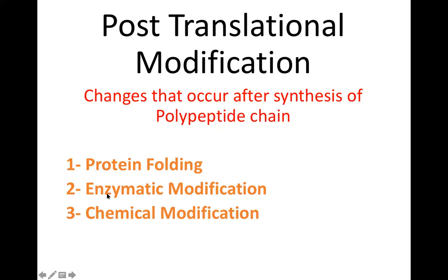The second modification is enzymatic modification, which means cleavage processes. When polypeptide chains are formed, digestive enzymes like trypsinogen, pepsinogen, and chymotrypsinogen are initially inactive. When activity is required, they are activated. This inactivity and activation are basically due to enzymatic modifications.